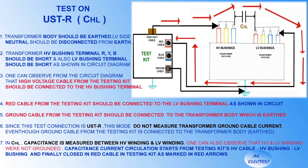In this slide we will see the test on USTR mode, CHL type. Transformer body should be earthed and LV site neutral should be disconnected from earth. Transformer HV bushing terminals RYB should be short-circuited, and LV bushing terminals also short-circuited as shown in the circuit diagram. The high-voltage cable from the testing kit connects to the HV bushing terminal, the red cable connects to the LV bushing terminal, and the ground cable connects to the earthed transformer body. Since this is USTR mode, ground cable current is not measured. In CHL type, capacitance is measured between HV winding and LV winding — both windings are not grounded. Capacitance current circulates from the test kit's HV cable through HV bushing, LV bushing, and closes in the red cable, as marked by red arrows.